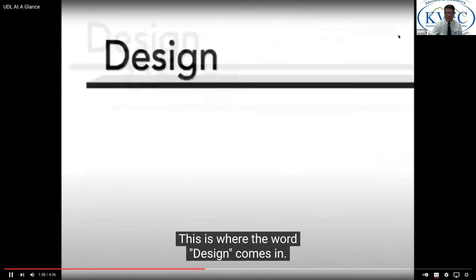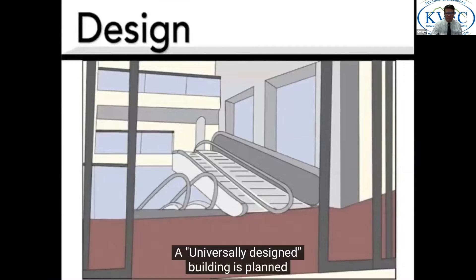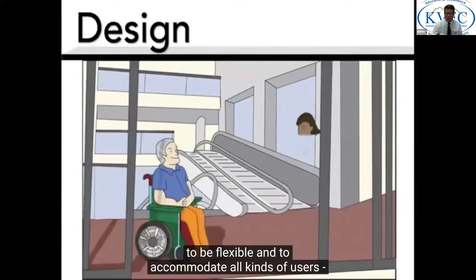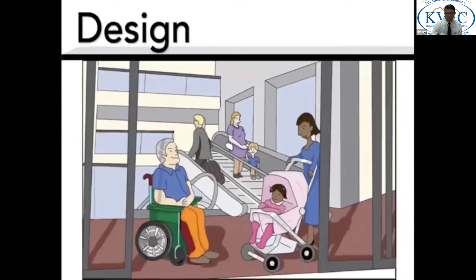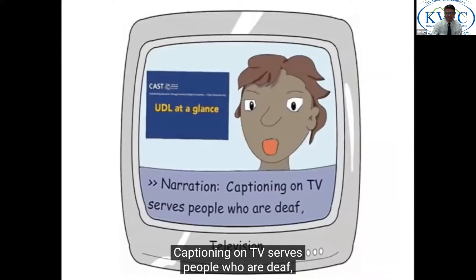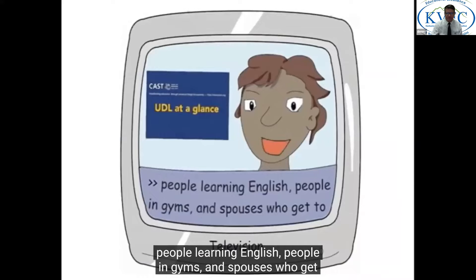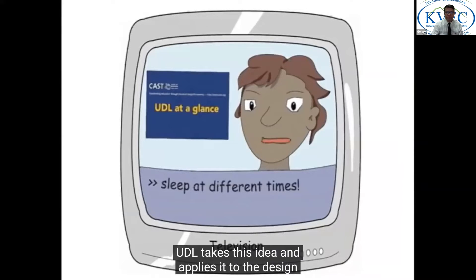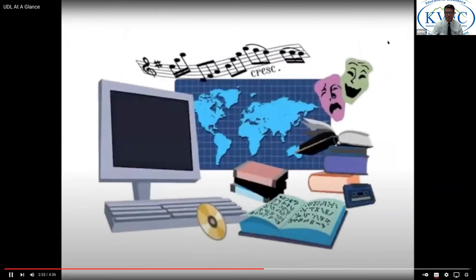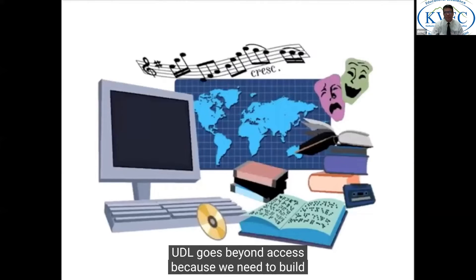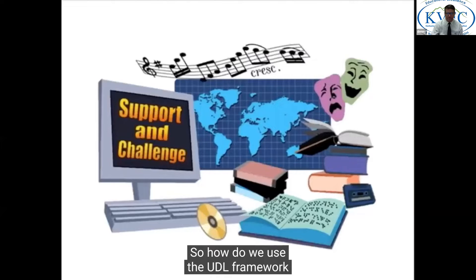This is where the word design comes in. A universally designed building is planned to be flexible and to accommodate all kinds of users with and without disabilities. If you design for those in the margins, your building works better for everyone — curb cuts and ramps are used by people in wheelchairs, people with strollers, and people on bikes. Captioning on TV serves people who are deaf, people learning English, people in gyms, and spouses who get to sleep at different times. UDL takes this idea and applies it to the design of flexible curriculum.